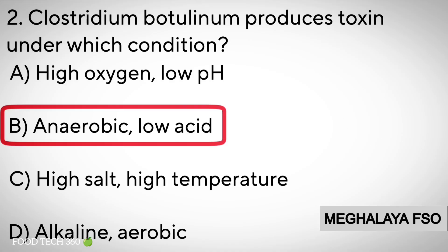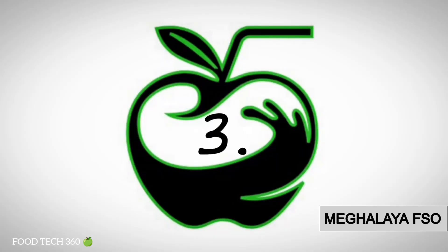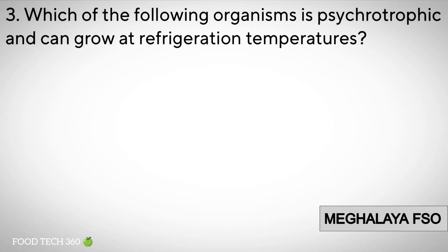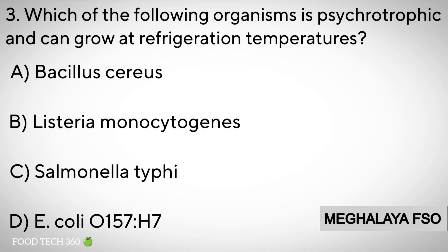Correct answer: B. Anaerobic, low acid. Question number 3: Which of the following organisms is psychrotrophic and can grow at refrigeration temperatures? Options: A. Bacillus cereus. B. Listeria monocytogenes.